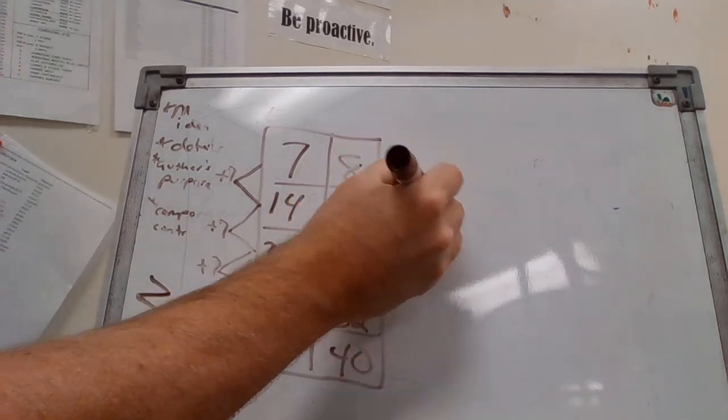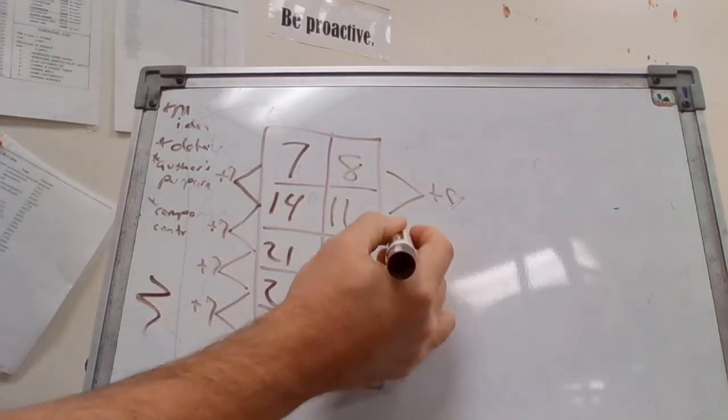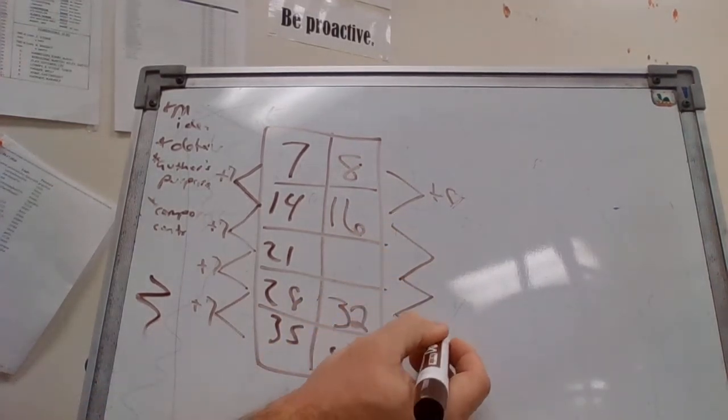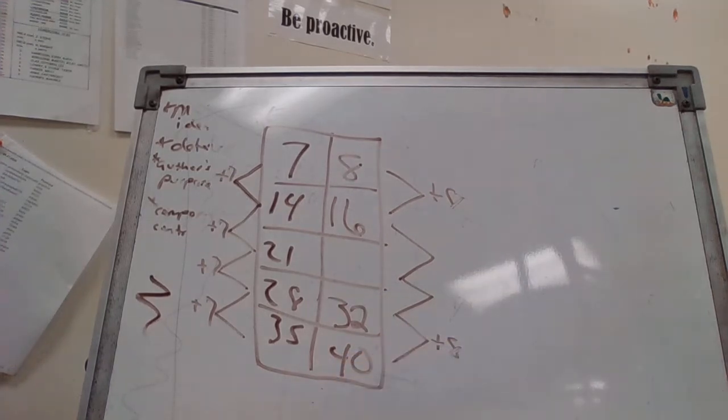thing here. So 8 to 16 is plus 8. We don't know what this one is and we don't necessarily know what that one is, but we know from 32 to 40 is plus 8. So